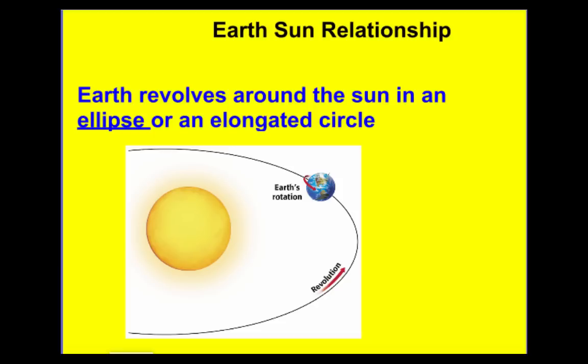The first thing we're going to talk about is Earth's orbit. We don't just sit still in space — we move around the Sun, and we call that a revolution. Our orbit is an ellipse, which just means it's an elongated circle. It's not a perfect circle; it's kind of stretched out on the ends.